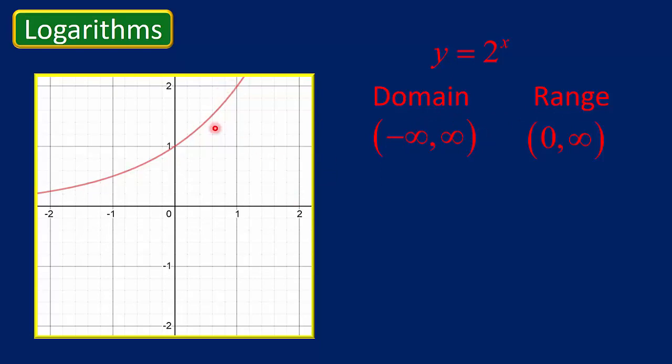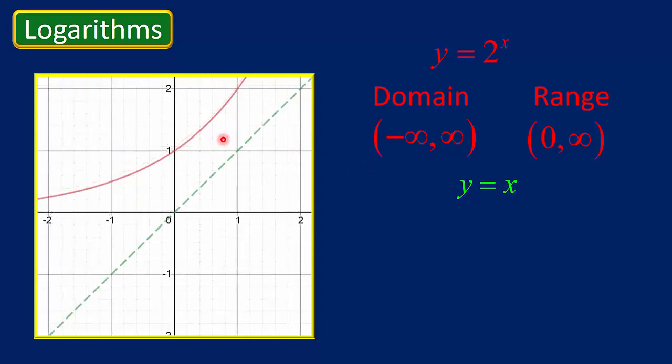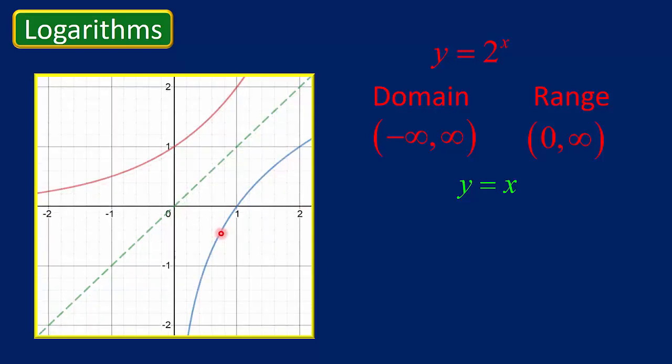Now, notice this exponential function is 1 to 1. That means not only does every x correspond to exactly 1 y, but every y corresponds to exactly 1 x. It passes the horizontal and the vertical line test. It's a function, and in particular, it's a 1 to 1 function. Now, what's important about that is 1 to 1 functions have inverse functions.